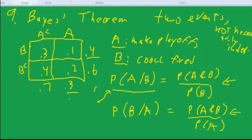That is, if the coach has been fired, what's the probability that they made the playoffs? Express this in terms of P(B|A), P(B), and P(A), but without using P(A and B). So use these two equations, eliminate P(A and B), and solve for another way of finding P(A|B). Okay, now pause and go ahead and do that.